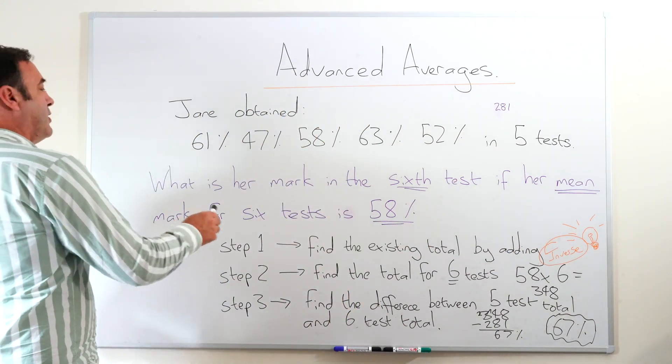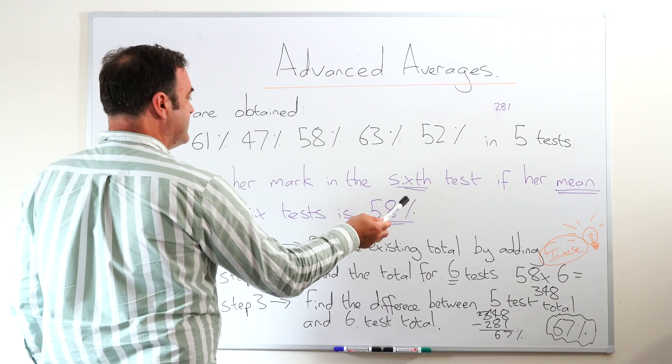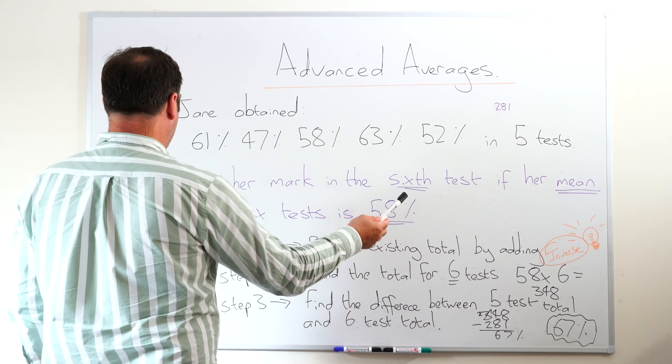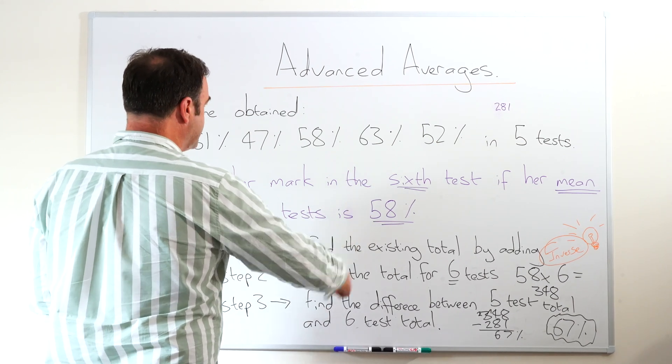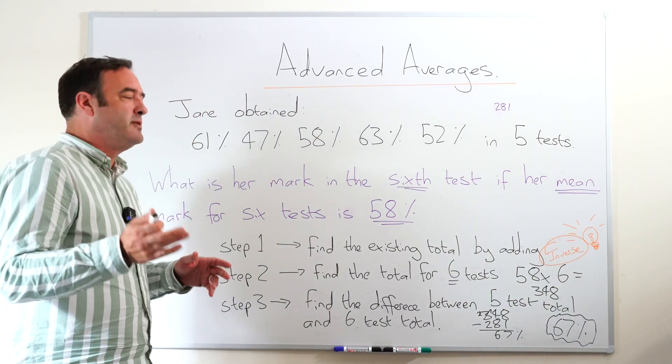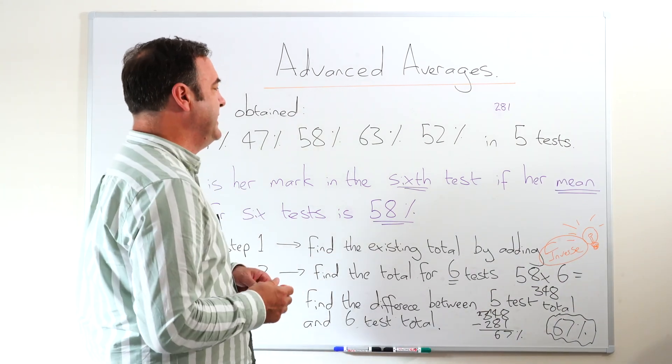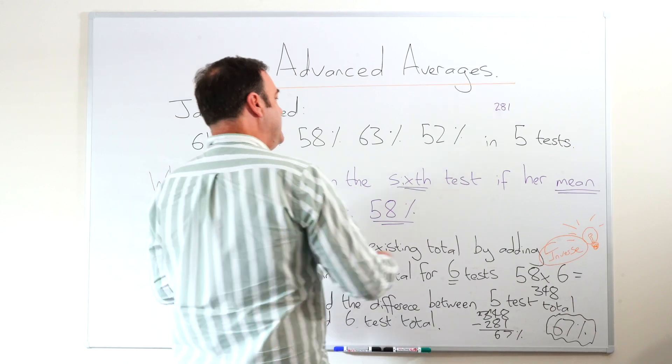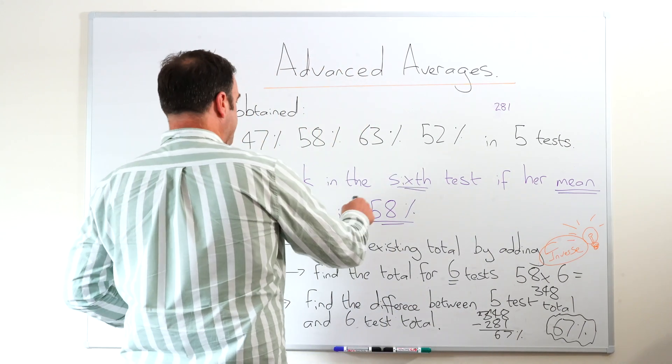So what is her mark in the sixth test, we don't know that, if her mean mark for six tests is 58. So I always say to kids start with what you know, they're always giving you a key, a clue to unlock the answer. So you've got the mean for six tests is 58.